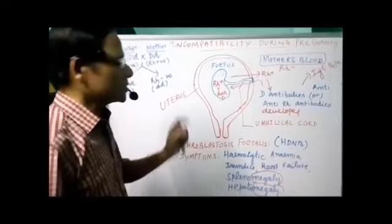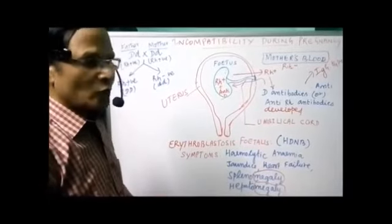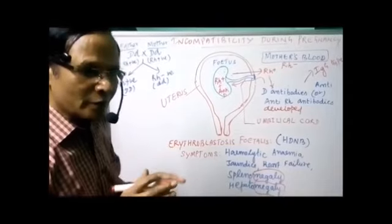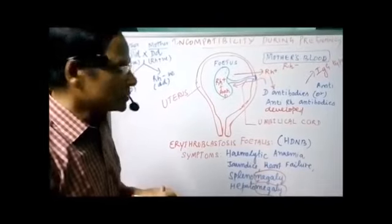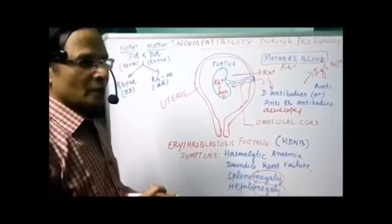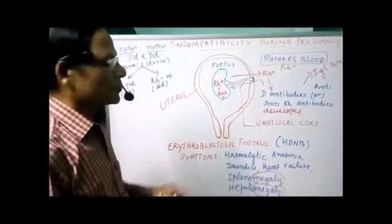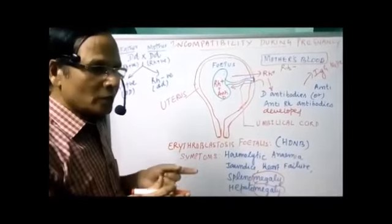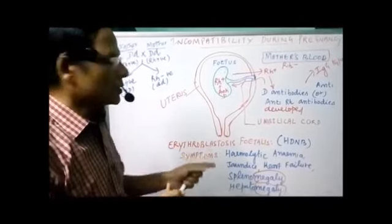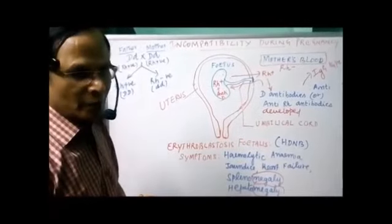So the fetus will be aborted. This is the reason why it is called incompatibility between the mother's blood and the fetal blood. If both blood groups are different, we have this disease. If both blood groups are the same — both positive or both negative — nothing would happen.